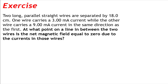Two long, parallel, straight wires are separated by 18.0 cm. One wire carries a 3.00 mA current, while the other wire carries a 9.00 mA current in the same direction as the first. At what point on a line in between the two wires is the net magnetic field equal to zero due to the currents in those wires?